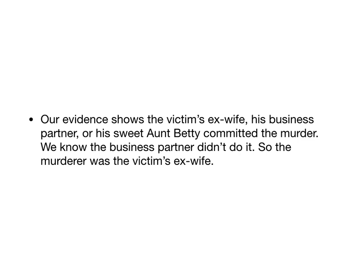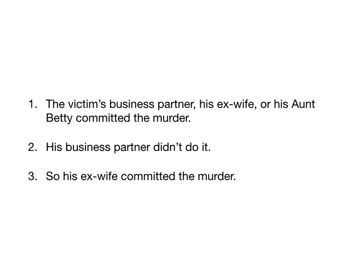Our evidence shows that the victim's ex-wife, his business partner, or his sweet Aunt Betty committed the murder. We know the business partner didn't do it, so the murderer was the victim's ex-wife. Let's rework this into our 1, 2, 3 form — premises with the conclusion at the end. The victim's business partner, his ex-wife, or his Aunt Betty committed the murder. His business partner didn't do it, so his ex-wife did. Validity is about the form of an argument, so let's look at the form and see if it is in fact valid.